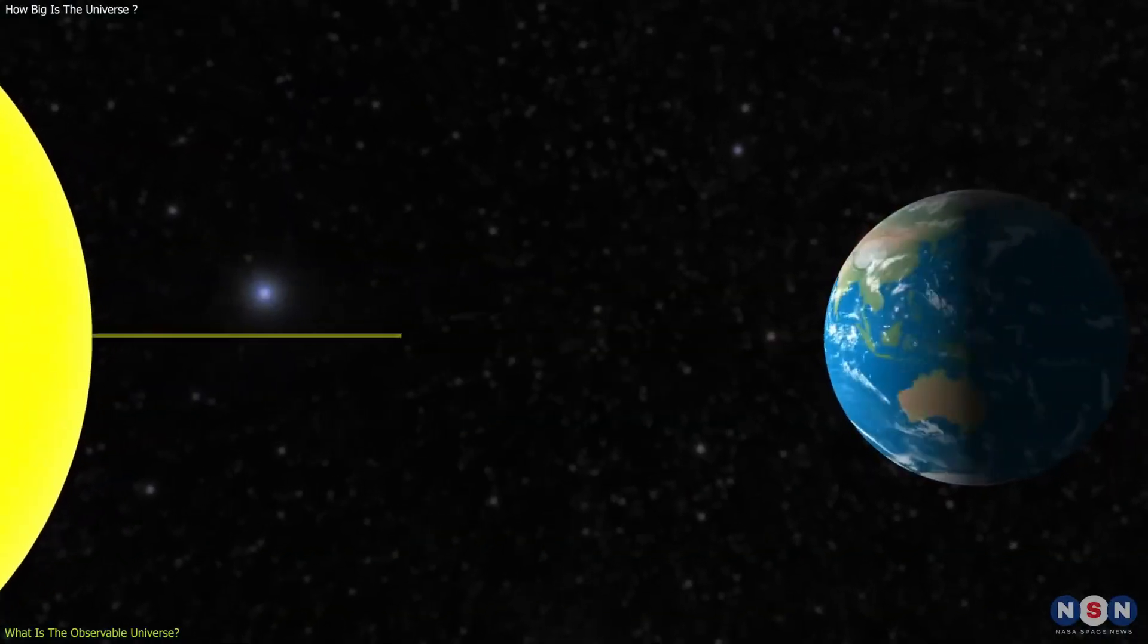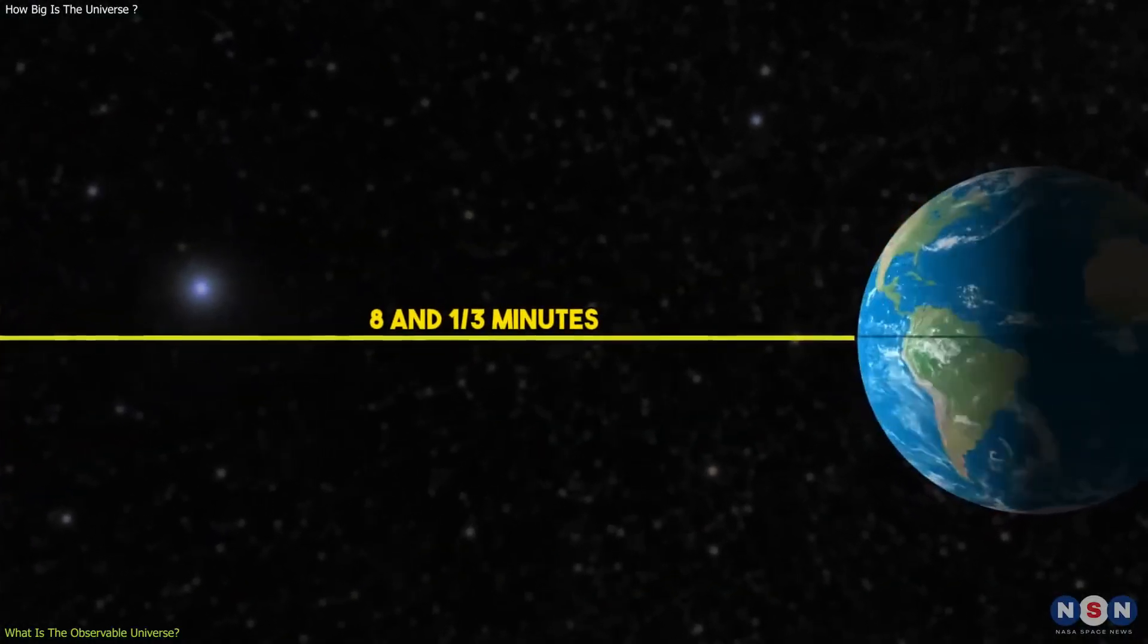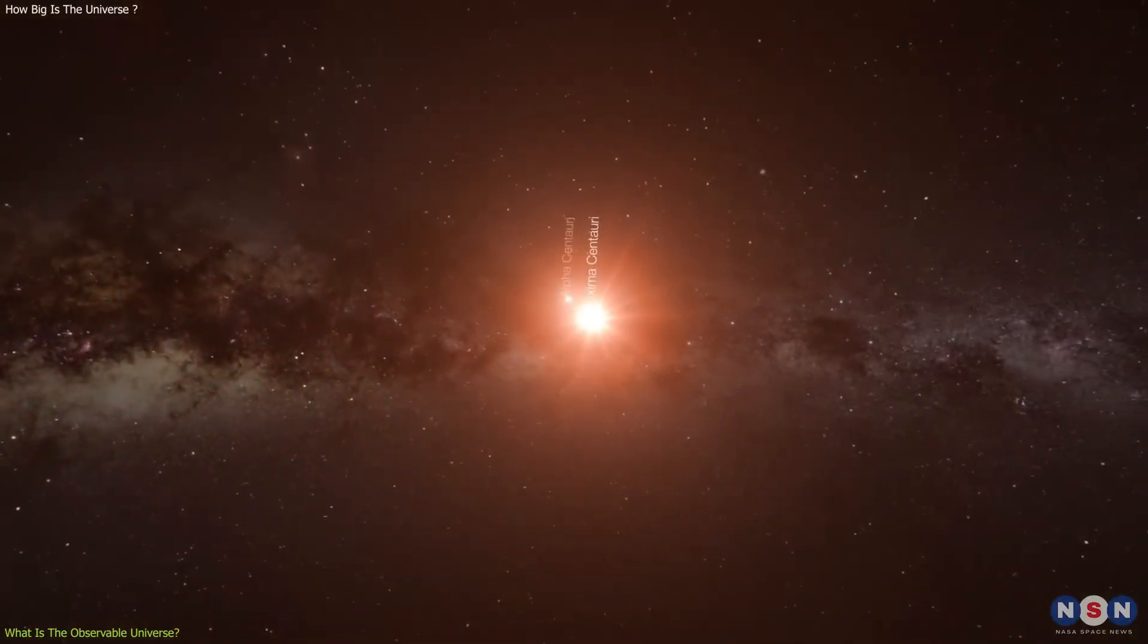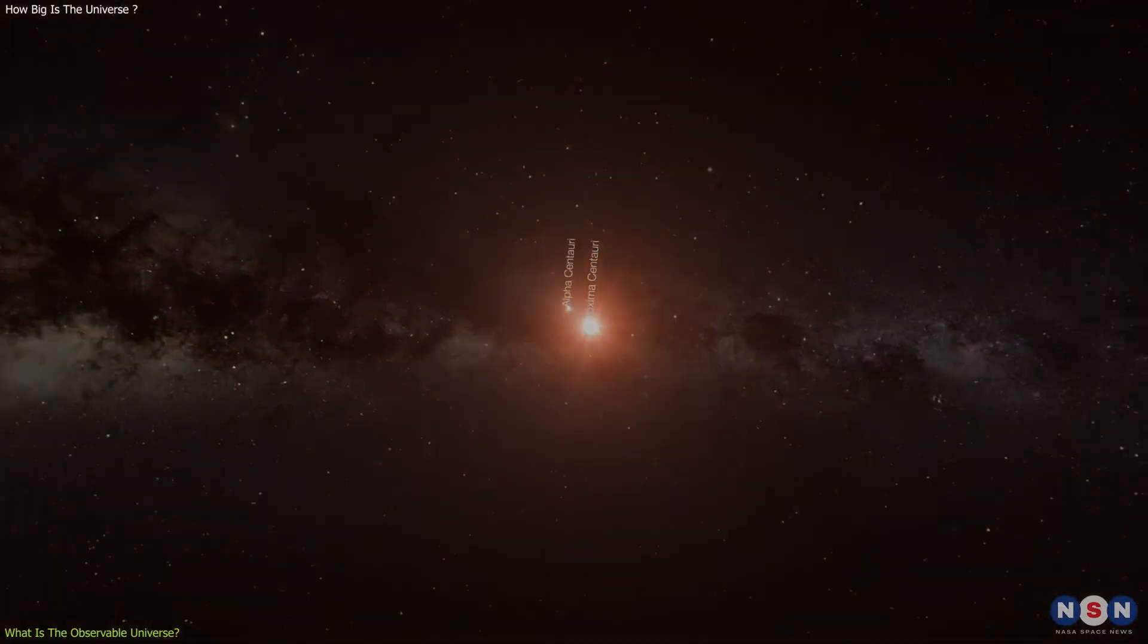For example, it takes about eight minutes for the light from the sun to reach us, and about four years for the light from the nearest star, Proxima Centauri, to reach us.